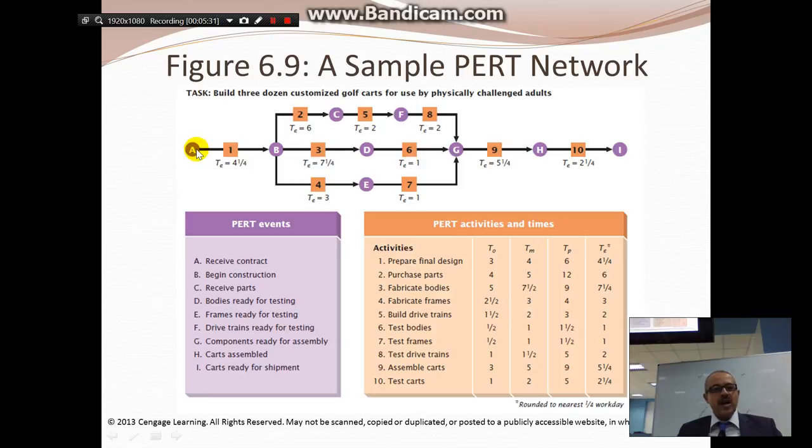So this is A, where we are, and this is number one, what we do. Once we finish this, we start to have three different routes. But once we all reach G, it means all the components are ready. Where did we get the components? From the bodies ready for testing, from E where the frames are ready for testing, and from here where we receive the parts. So here we made the body, here we made the frame, and here we made the parts. Then at point G, we have all the components ready, and then we assemble them and ship them.